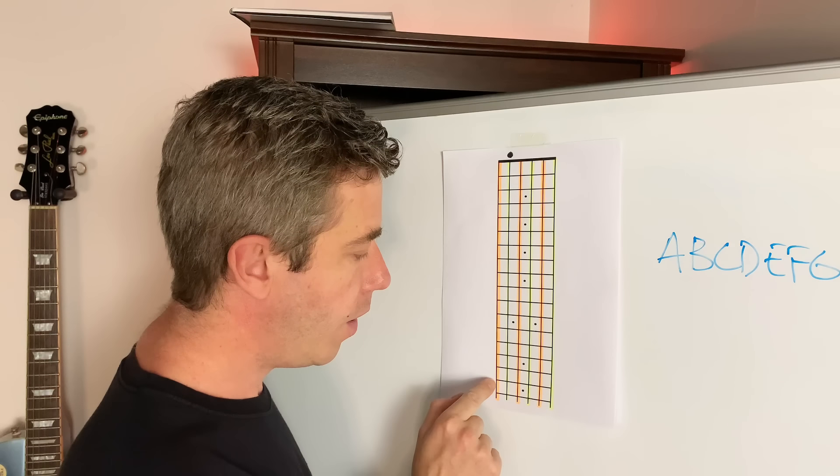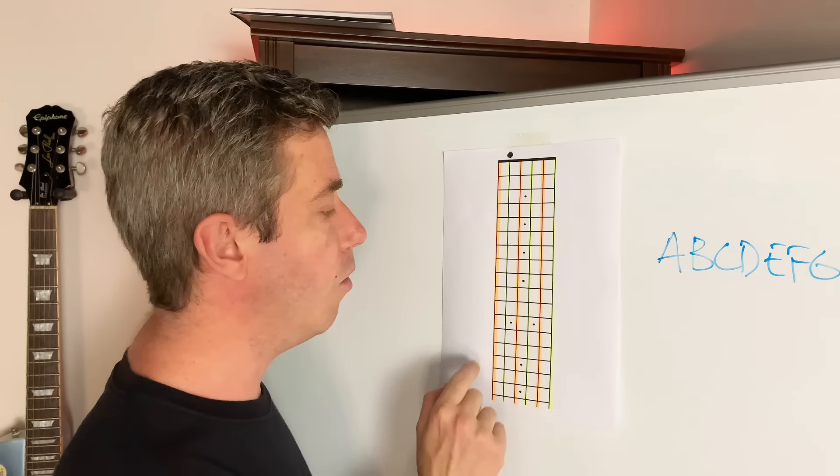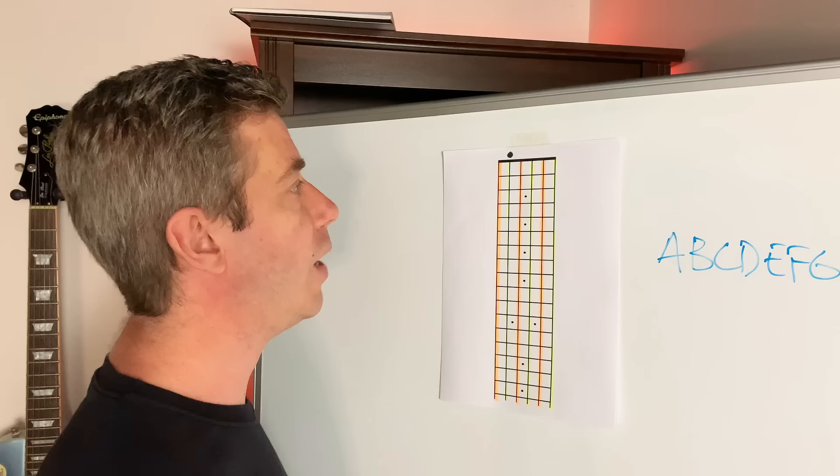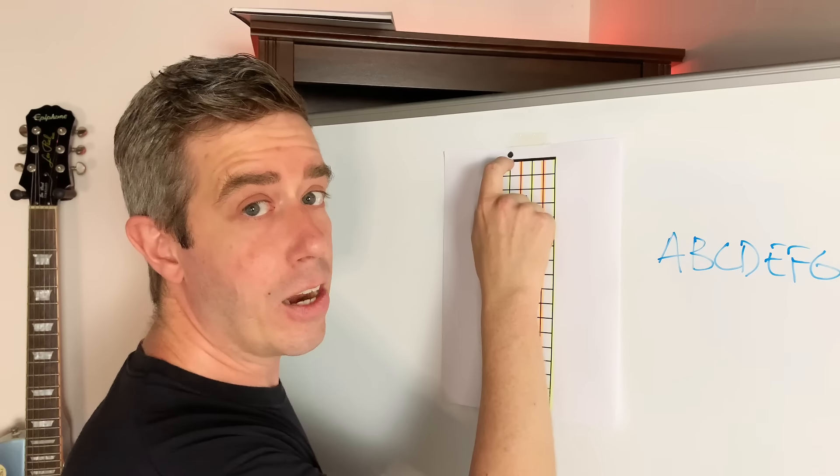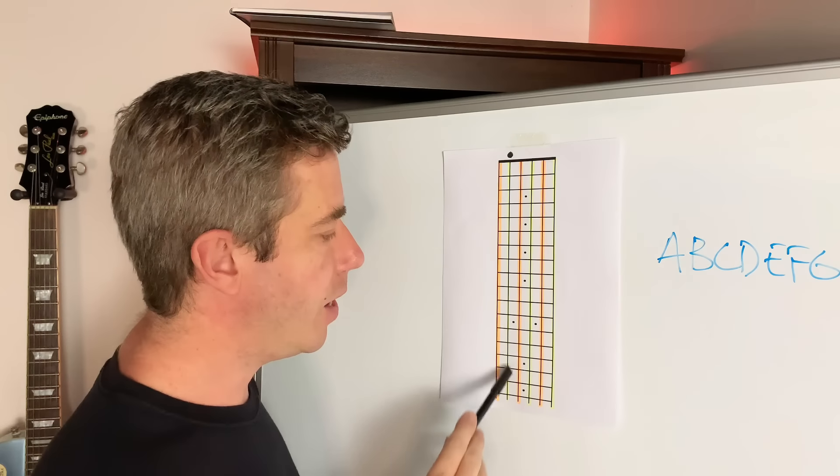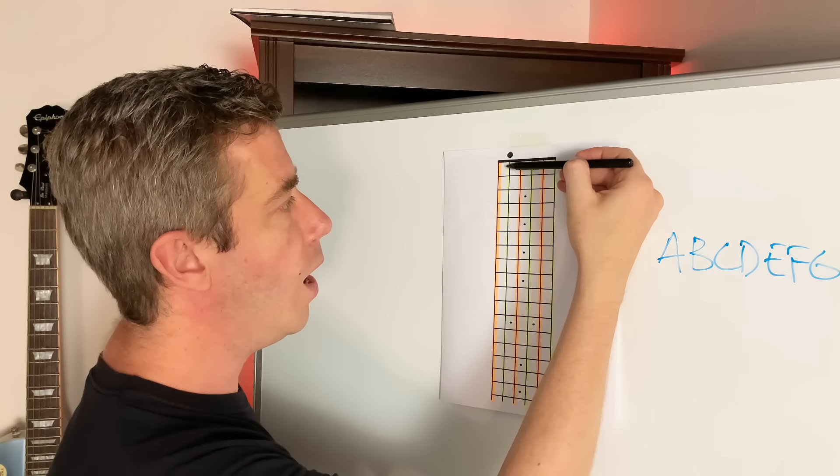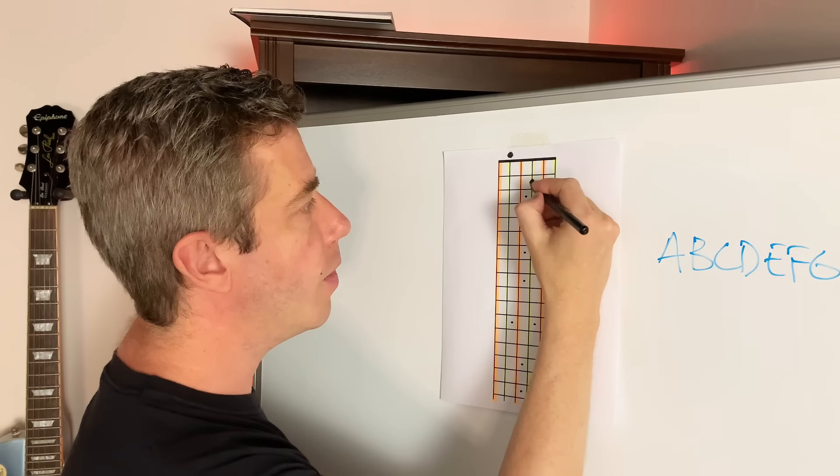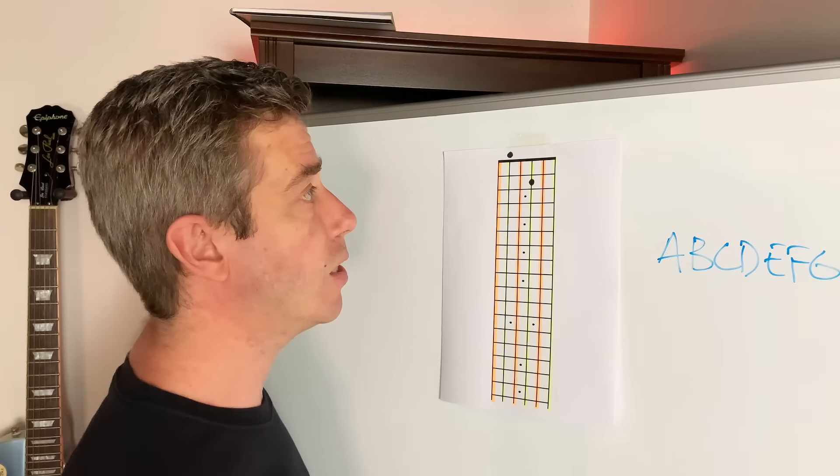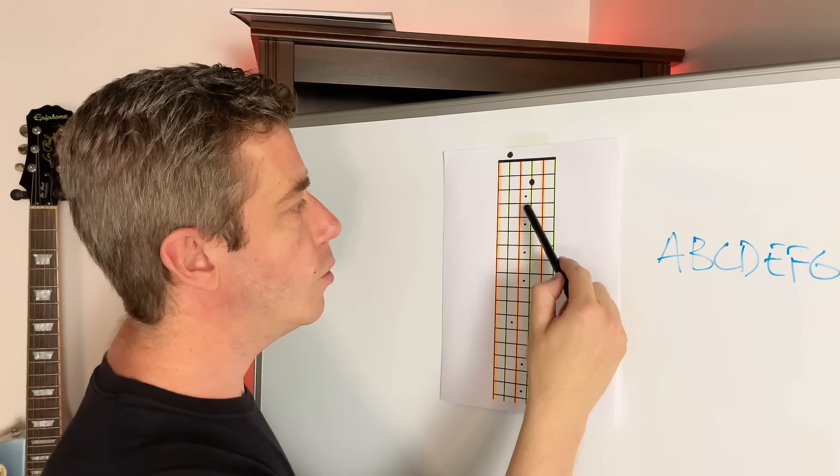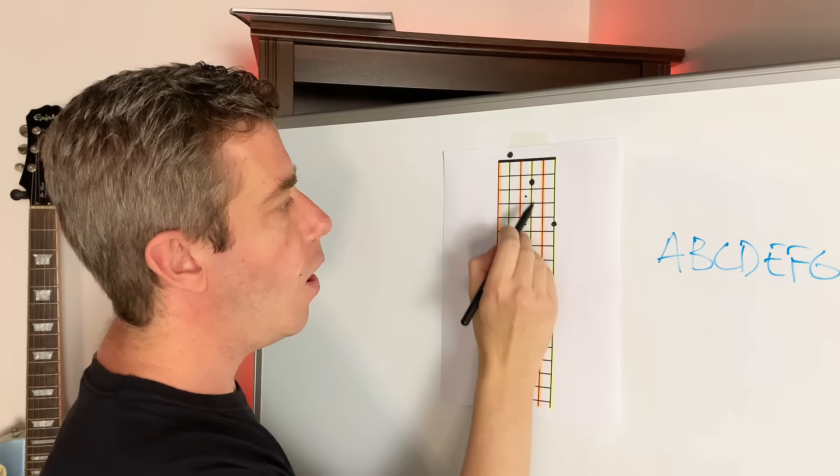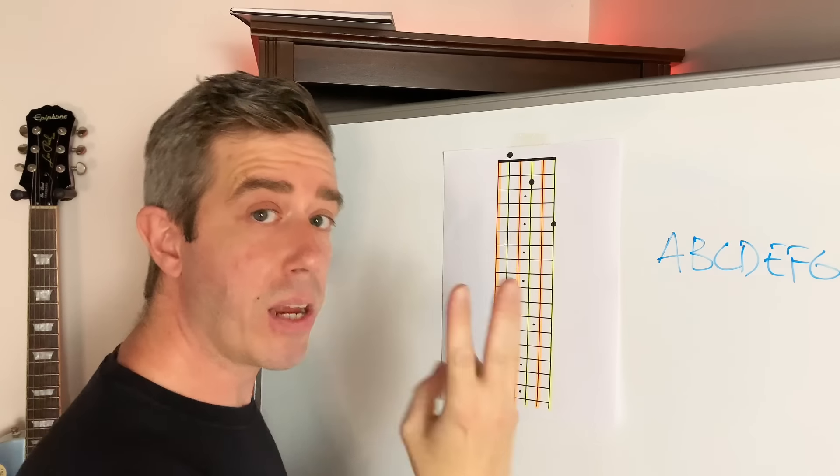So why did I color orange and yellow? Because I want you to distinguish the thickest string from the thinnest string of each pair of strings. So I found that A note. Now I want to find it on the middle pair of strings. What string am I? The yellow one. So I'm just going to bounce two frets. One, two, and that over there is going to be an A note too. Simple, right? Now to bounce to the thinnest pair of strings, remember it's three. So I'm going to go one, two, three, yellow or orange string? Yellow. So now I know all my A notes on three strings. Simple as that.